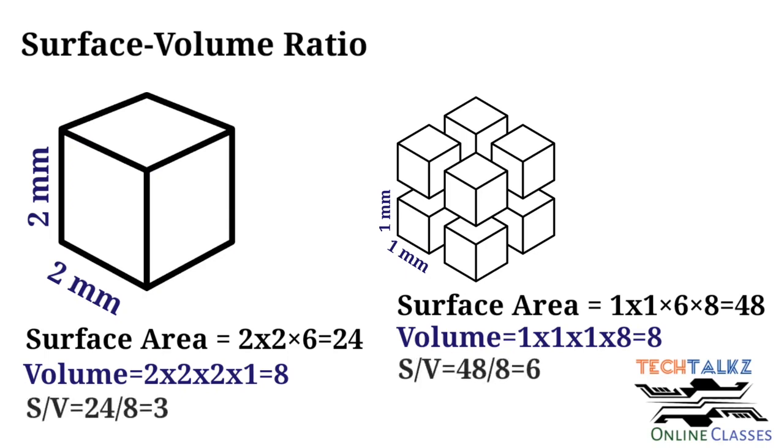Then when you calculate the surface area to volume ratio between the 2mm as well as 1mm, you can see that the surface area to volume ratio for 2mm is only 3, and surface area to volume ratio for 1mm cube is 6. So it is getting increased.